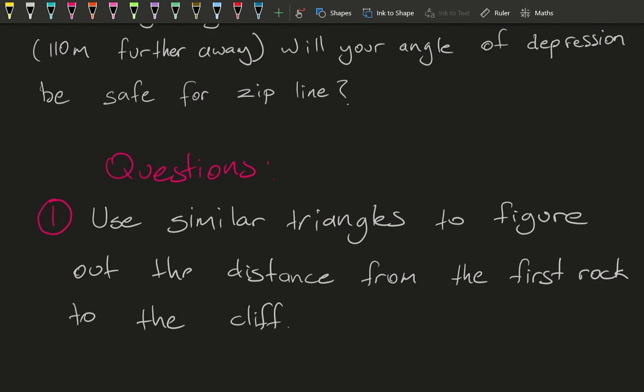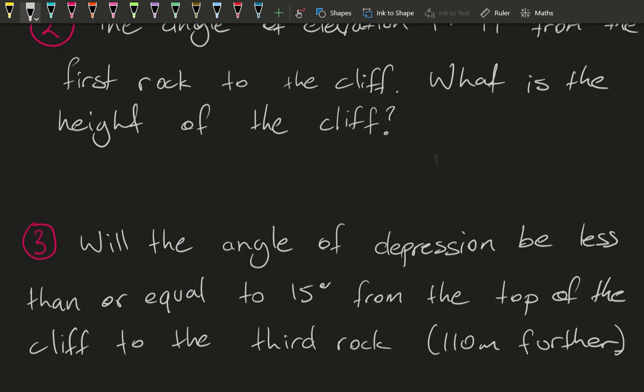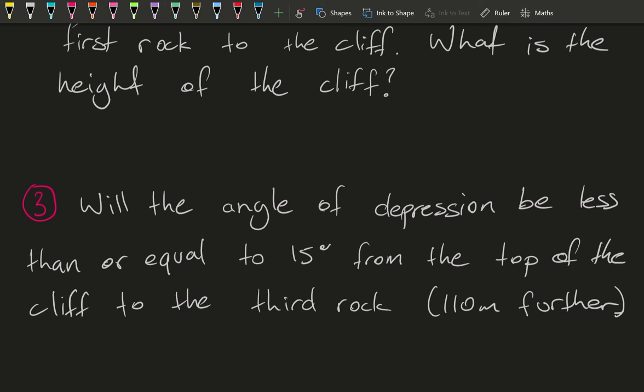Use similar triangles to figure out the distance from the first rock to the cliff. And question two, the angle of elevation is 19 degrees from the first rock to the cliff. So what is the height of the cliff? And then step three, will the angle of depression be less than or equal to 15 degrees from the top of the cliff to the third rock, which is 110 meters further away.